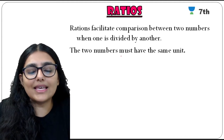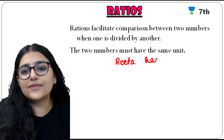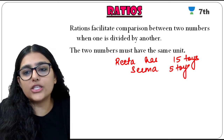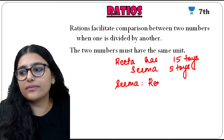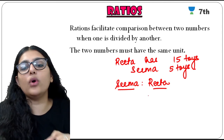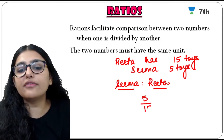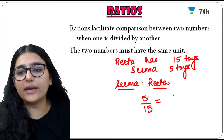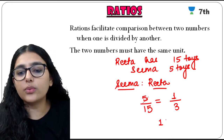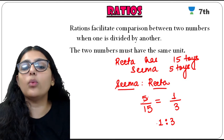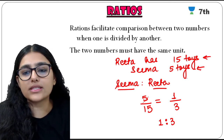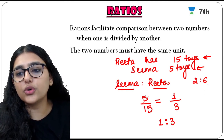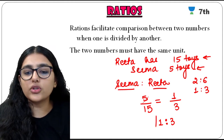For example, Rita has 15 toys whereas Seema has only 5 toys. What is the ratio of Seema's toys to Rita's toys? What you mention first comes in the numerator, so that is 5. We write this in division form: 5 upon 15. Bringing it to lowest form — 5 ones are 5 and 5 threes are 15 — the ratio is 1:3. For every 1 toy Seema has, Rita has 3 toys. So if Seema has 2 toys, Rita has 6 toys, which is 2:6, equivalent to 1:3.